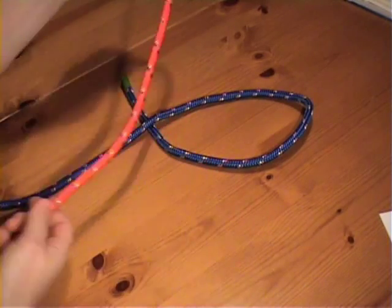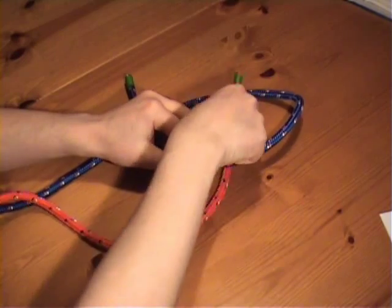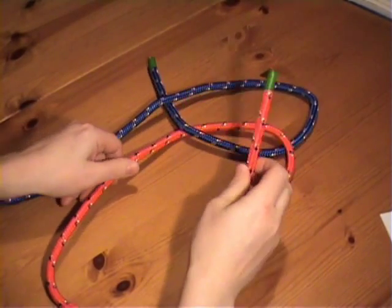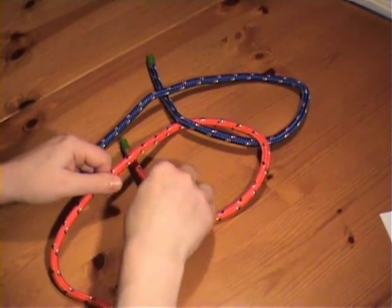Then you form an identical crossing turn with the second rope, but interlink it with the first, like that. And the working end of the second rope goes over the standing part of the first.